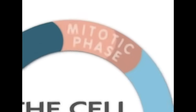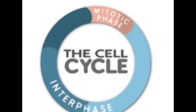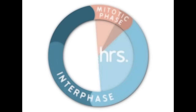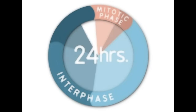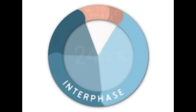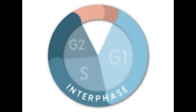Mitosis is only one part of what is called the cell cycle. For many eukaryotic cells, a cell is duplicated every 24 hours. Most of the life of a cell is spent in interphase. Interphase consists of three stages called G1, S, and G2.